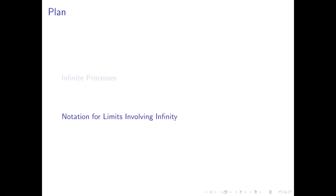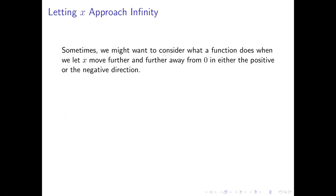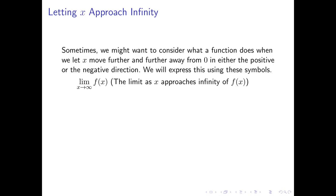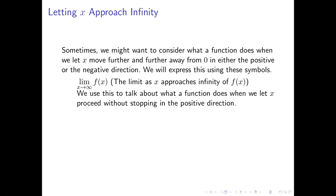This brings our attention to notation for limits involving infinity. One thing we just looked at with x squared is what happens when x moves further and further away from zero in the positive direction. Here's how we'll talk about this using limit symbols. We write the limit as x approaches infinity of f of x. This describes what happens when we let x get bigger and bigger in the positive direction, and the symbol communicates what happens to the values of f of x when we do that.